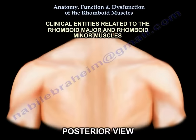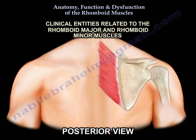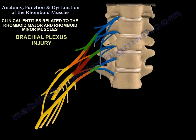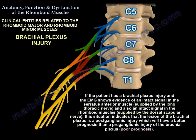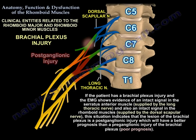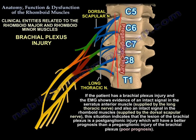Clinical entities related to the rhomboid major and minor muscles. Brachial plexus injury: if the patient has a brachial plexus injury, and the EMG shows evidence of an intact signal in the serratus anterior muscle — supplied by the long thoracic nerve — and also an intact signal in the rhomboid muscles — supplied by the dorsal scapular nerve — this indicates that the lesion of the brachial plexus is a post-ganglionic injury, which will have a better prognosis than a pre-ganglionic injury.